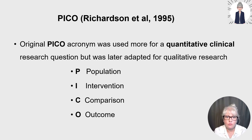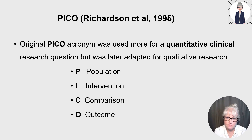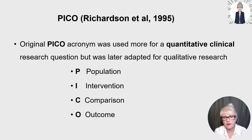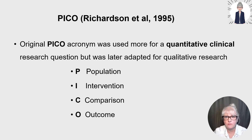O for outcomes — what outcomes did the researchers measure to assess effectiveness of an intervention? You could have outcomes such as decreased mortality, decreased pain, tremors, anxiety, infection rates, decreased length of stay, or decreased anxiety for example.